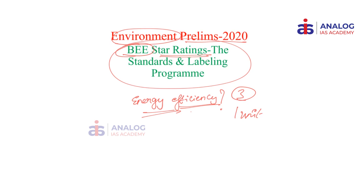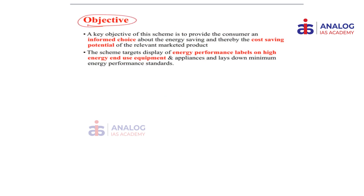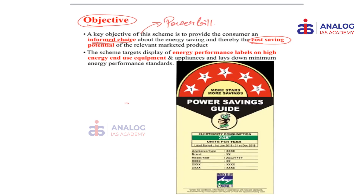The Bureau of Energy Efficiency sets standards for energy efficient appliances. The end objective of this exercise is about making informed choices and ensuring that the cost incurred on our power bills is saved. It is about empowering the consumer to ensure he makes informed choices while purchasing electrical appliances. For example, this energy label shows that a particular appliance consumes around 248 units per year and is rated five stars. The Bureau of Energy Efficiency lays down standards which electrical appliance manufacturers must abide by.